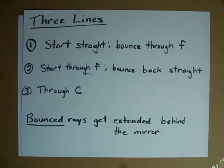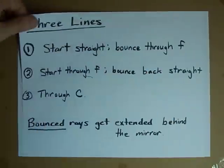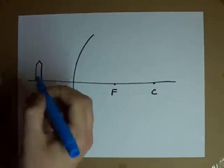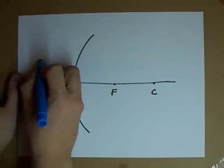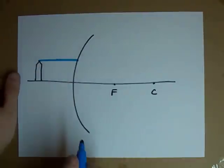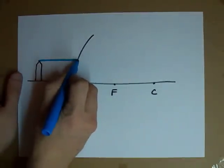First line that you draw, start out straight and bounce back through F. So start with your pencil tip, draw to the mirror, and then bounce back through F.